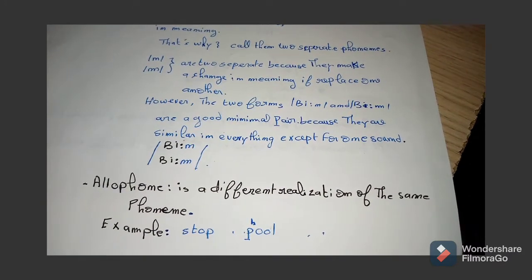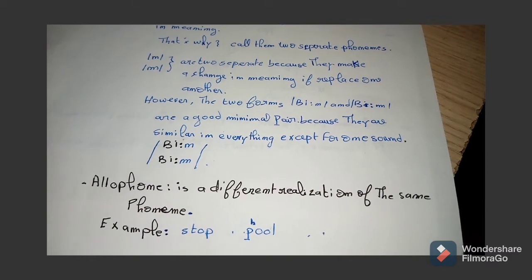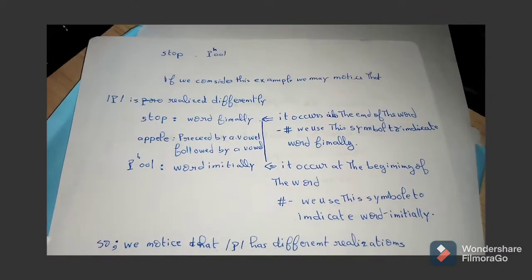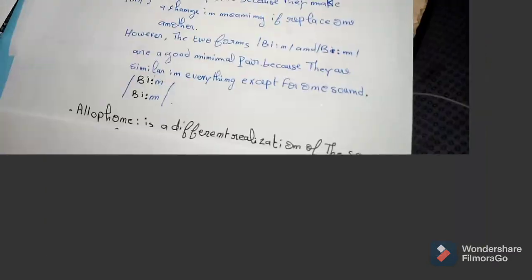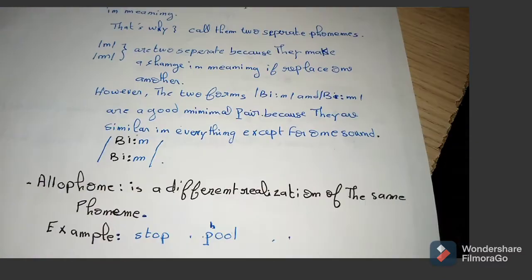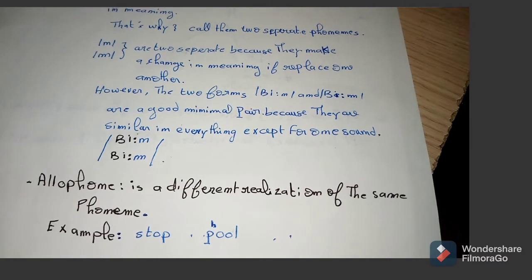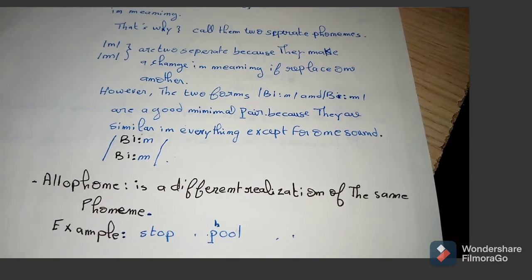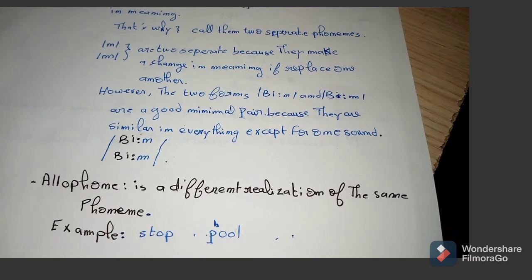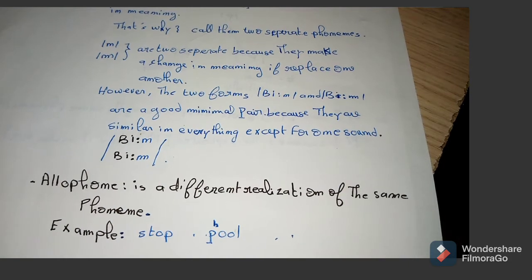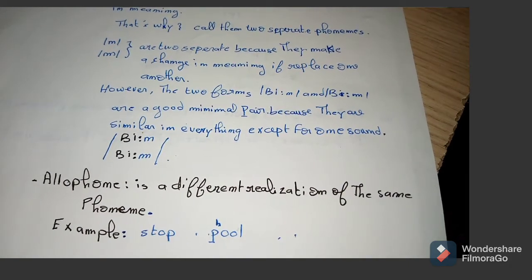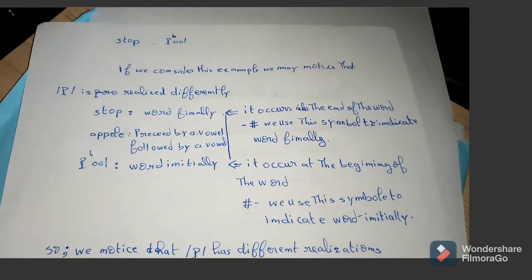So let's move now to allophone. What is an allophone? An allophone is actually a different realization of the same phoneme. So we can say that a phoneme has different realizations or different pronunciations.